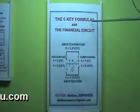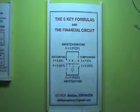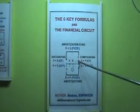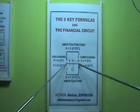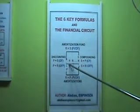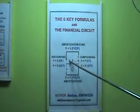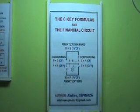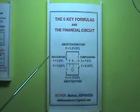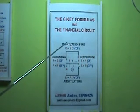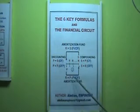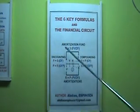The six K formulas and the financial circuit. This covers immediate and due cash flows — compounding, discounting, amortizations, and amortization fund. This is the financial circuit. You can send your questions by email. Thank you very much.